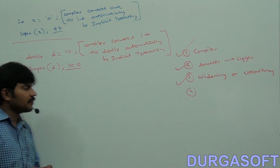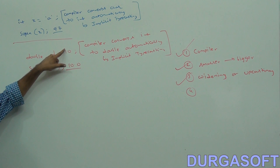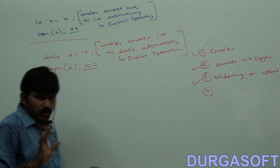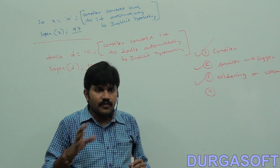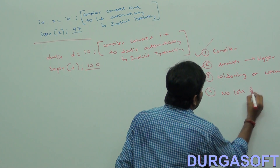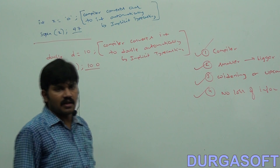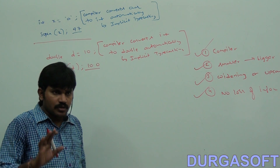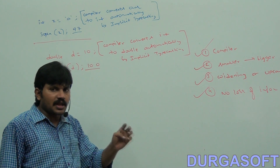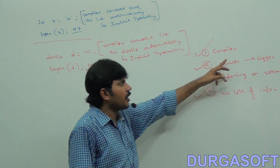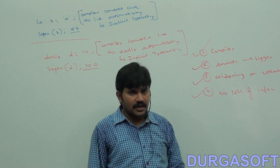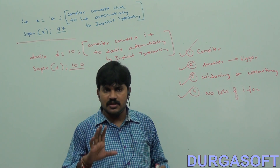In implicit typecasting, there is no loss of information. 10 to 10.0, or 97 from 'a' — no information is lost. The compiler won't perform this activity if there were any loss. So: compiler is responsible, smaller to bigger, widening or upcasting, and no loss of information.